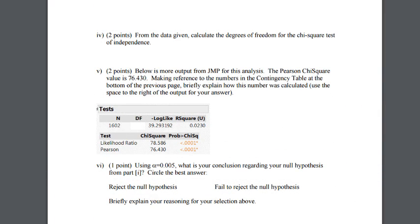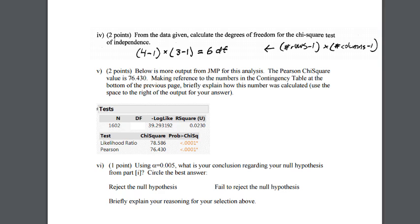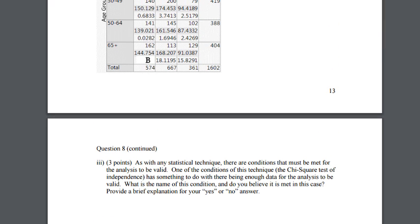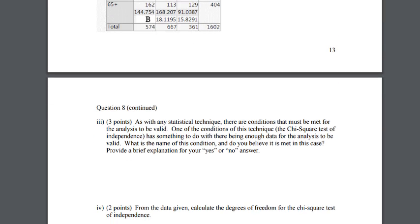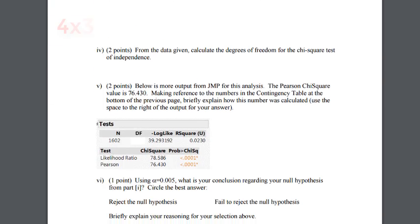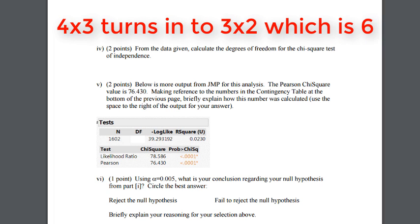When we calculate the degrees of freedom for any chi squared test of independence, we simply do rows minus one times columns minus one. This is the degrees of freedom for a chi squared test of independence. If you remember, on ours, we have four rows and we also have three columns. We don't use the totals. We just use the rows and the columns from the groups. So when we do four times three, we get 12. But we want three times two because it's rows minus one times columns minus one. So three times two is equal to six.